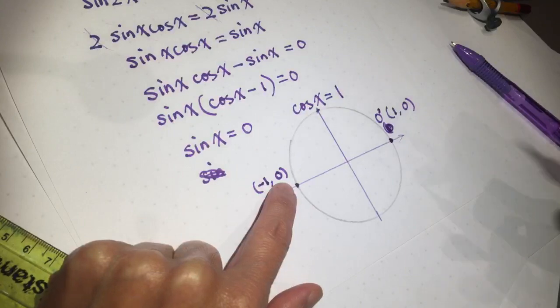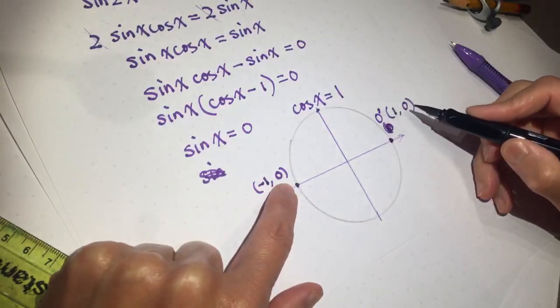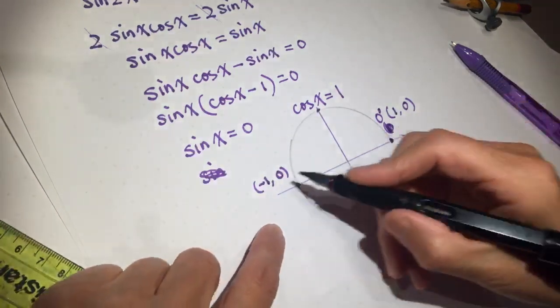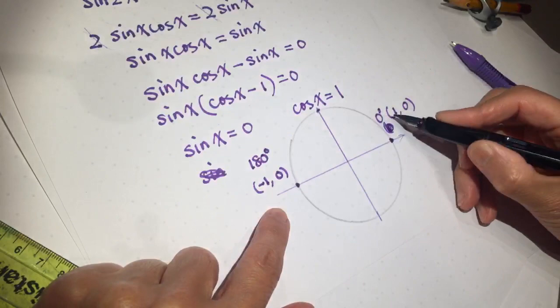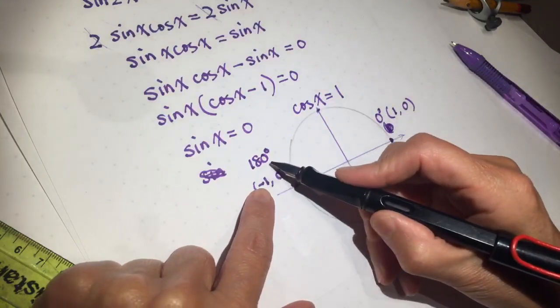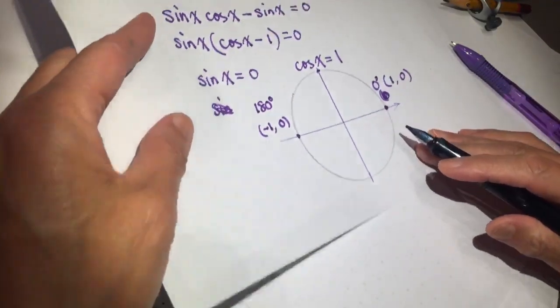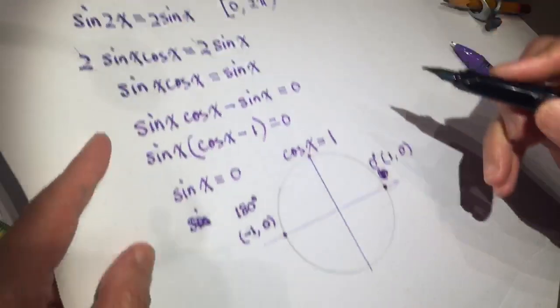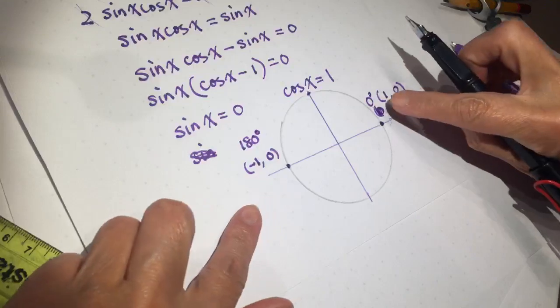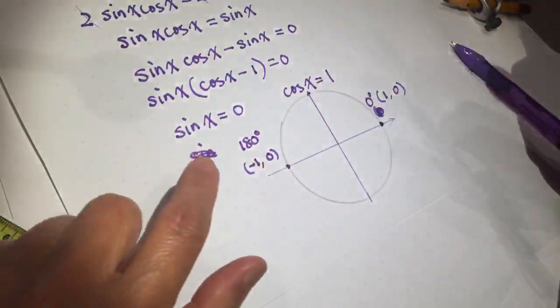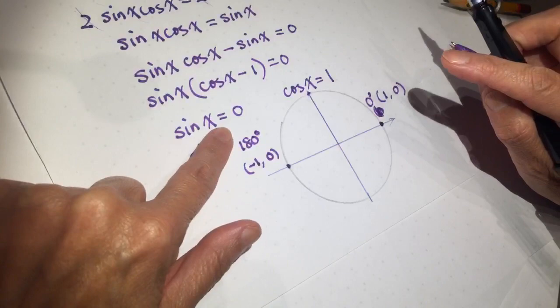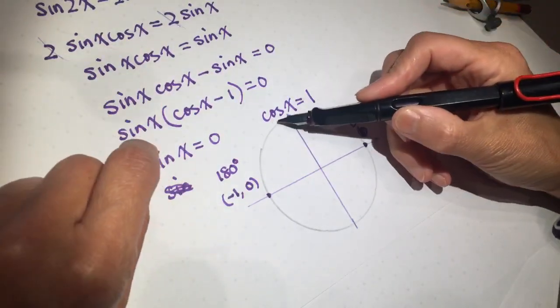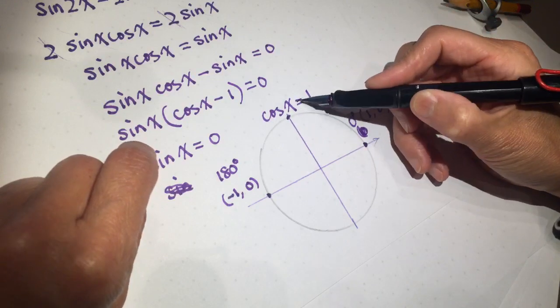Then it could be zero degrees, or 180 degrees, or 360 degrees, but 360 degrees is not included. So zero degrees or 180 degrees is possible for this sin(x) = 0.